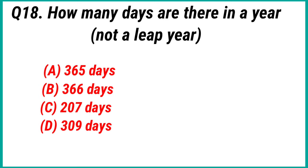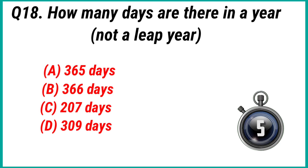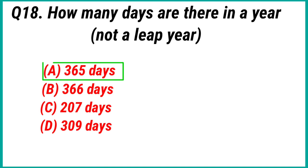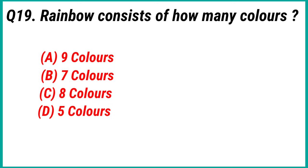Question 18: How many days are there in a year, not a leap year? Answer option A: 365 days.